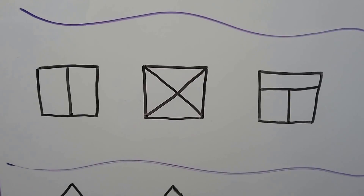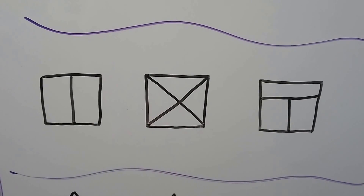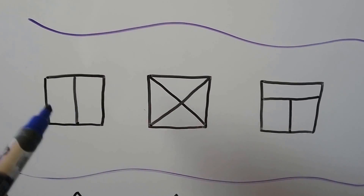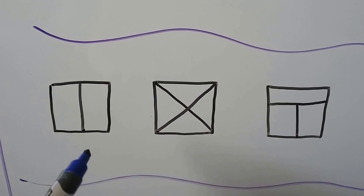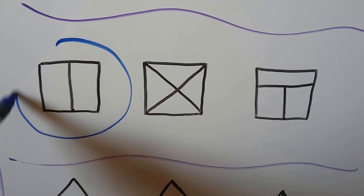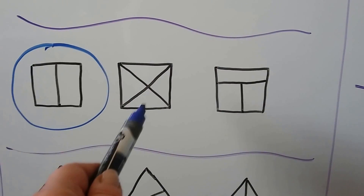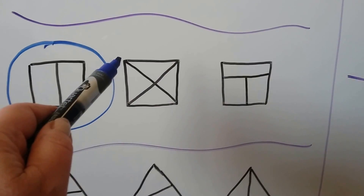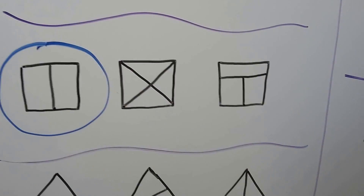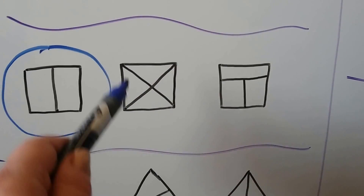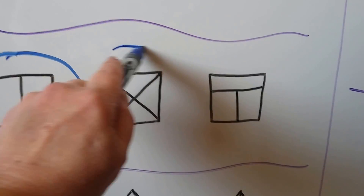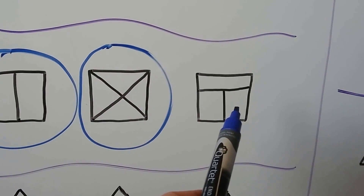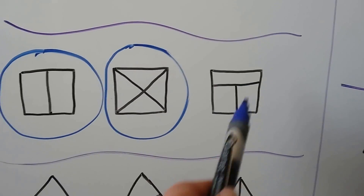Look at these squares. Which ones show equal parts or equal shares? Well, this one — this line cuts it right in half, so we have two equal shares, two equal parts. What about this one? It cuts across from this vertex to this vertex, and then it goes from this vertex down to that vertex. If we cut it like that, that would make four equal parts. Would these be equal parts? They're all different sizes, so no.